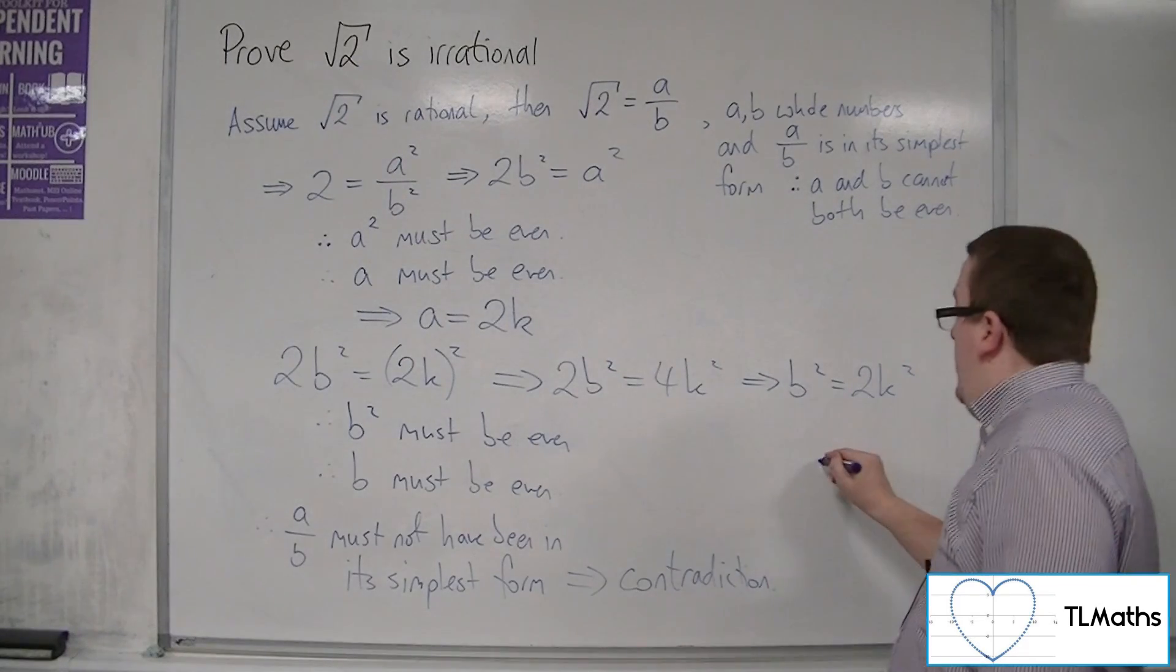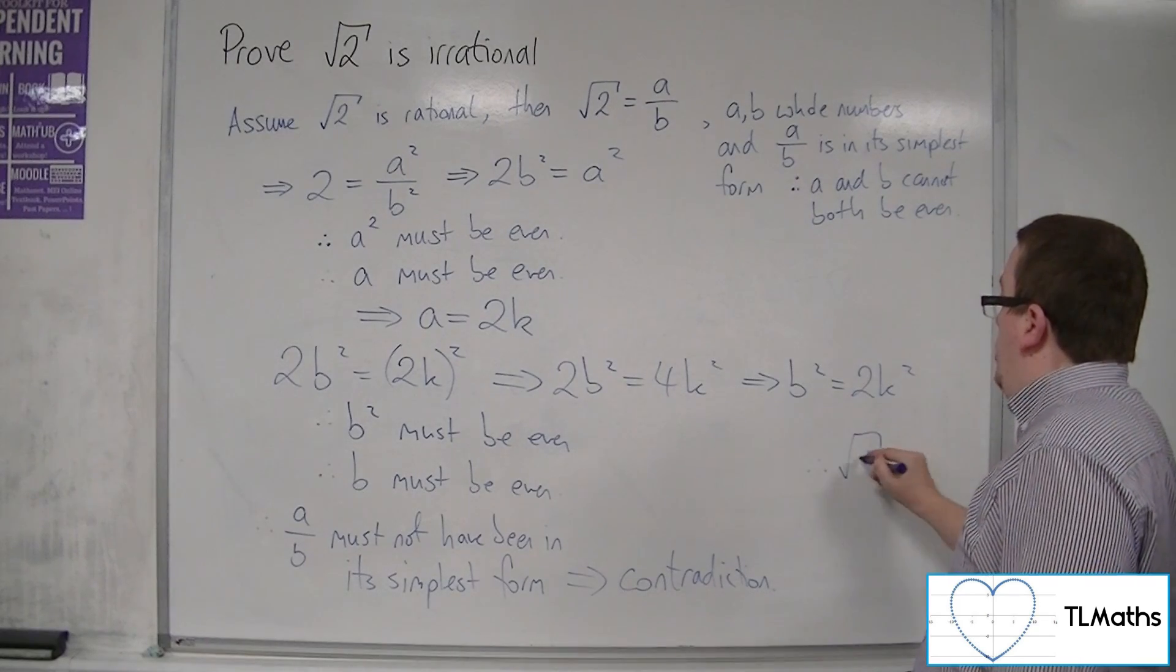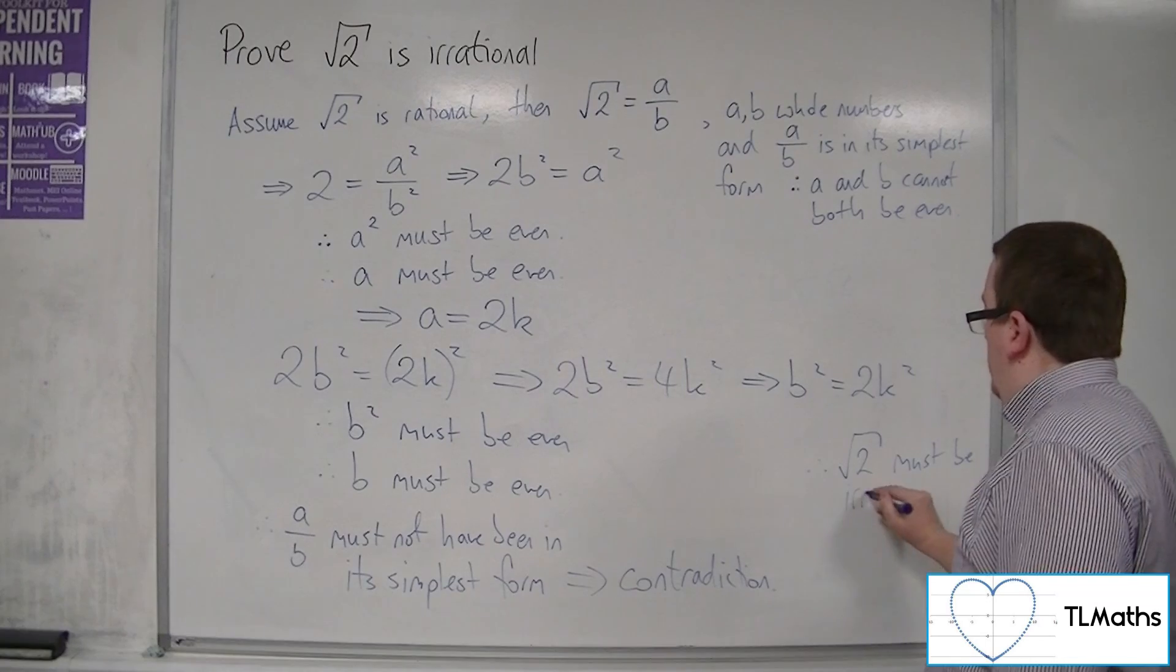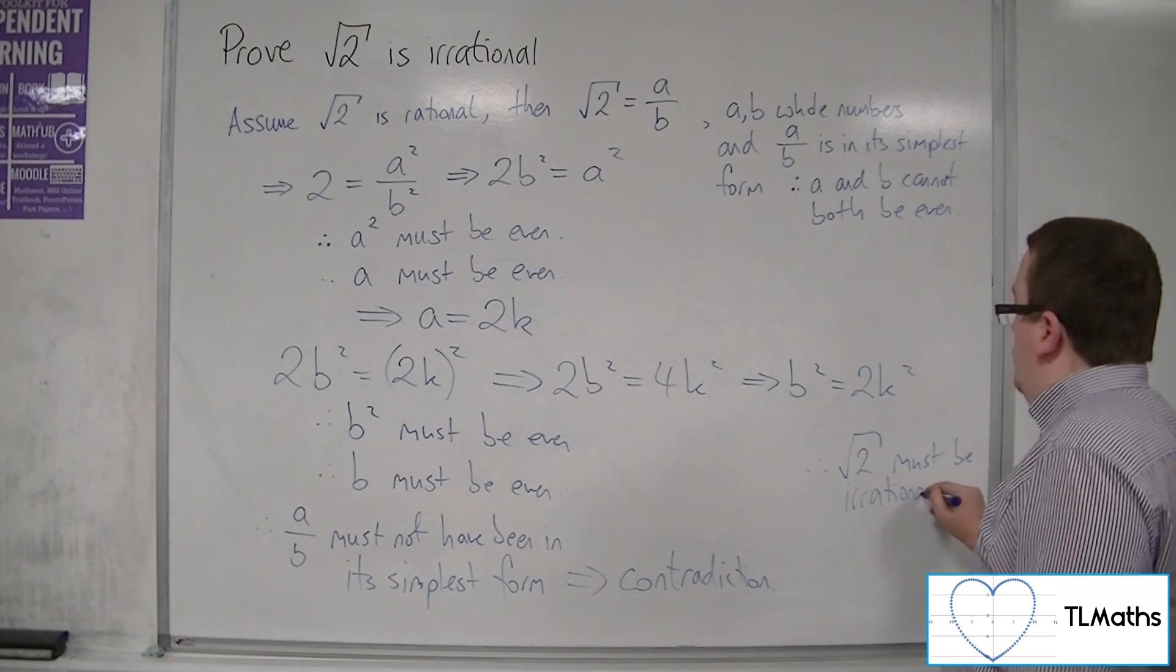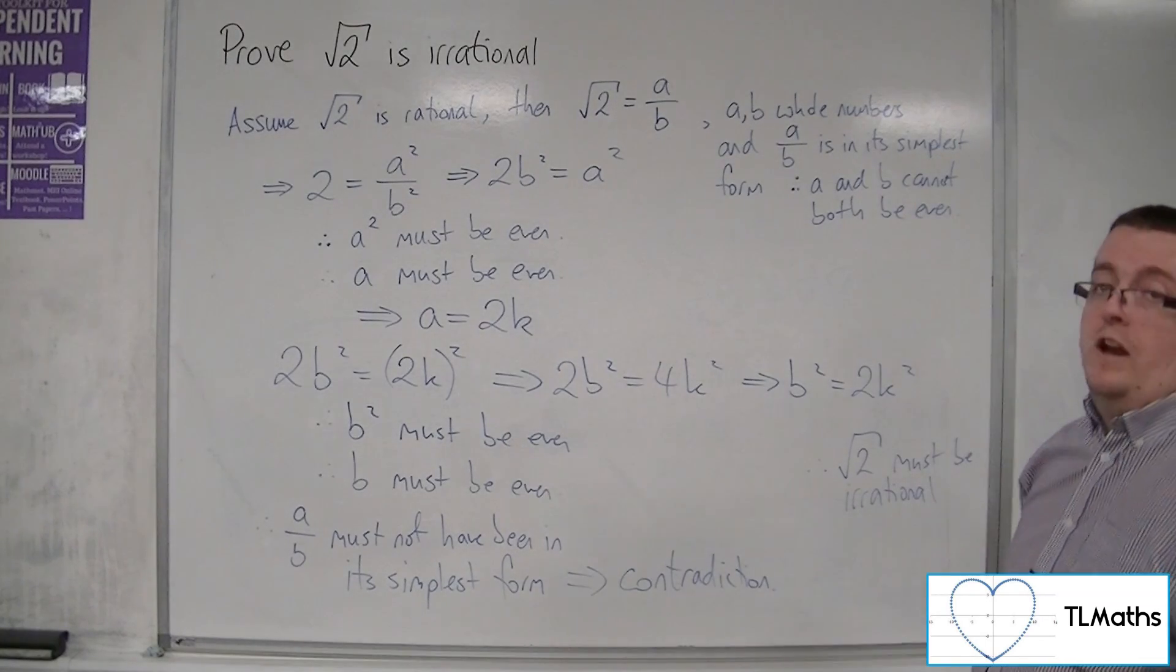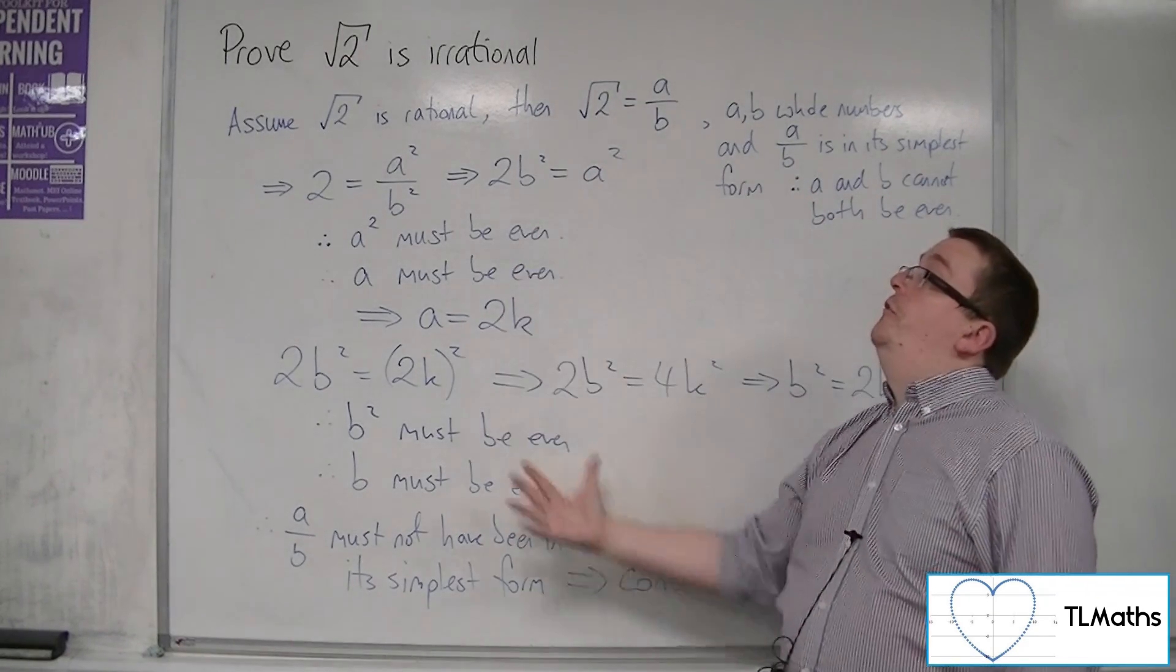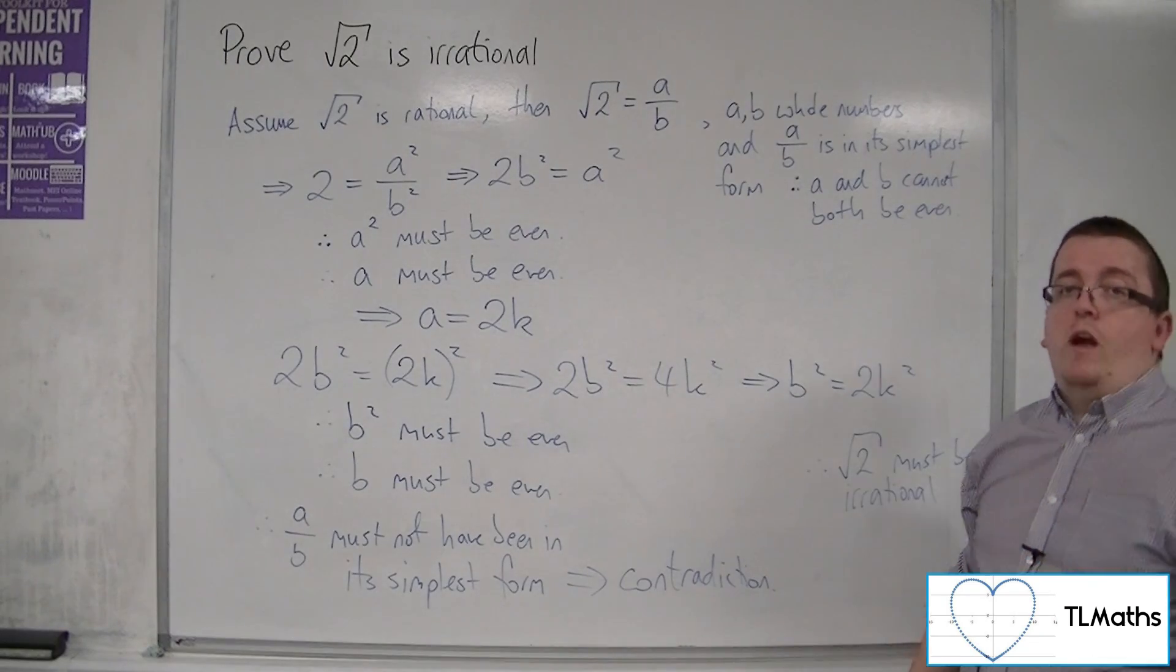So therefore root 2 must be irrational, because we have shown that it isn't rational. And that is the proof that root 2 is irrational.